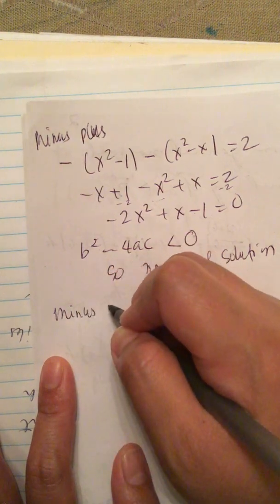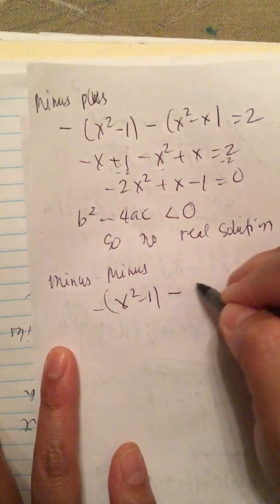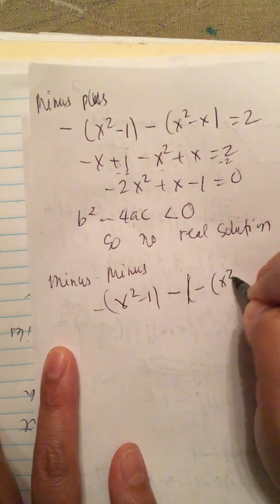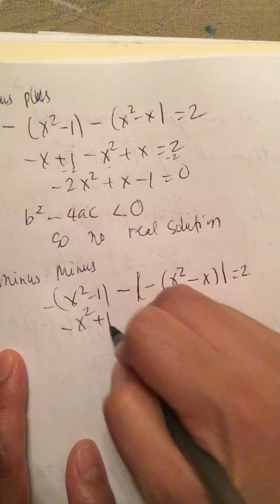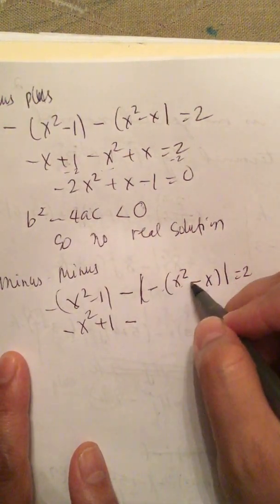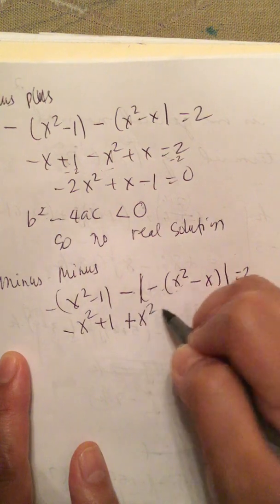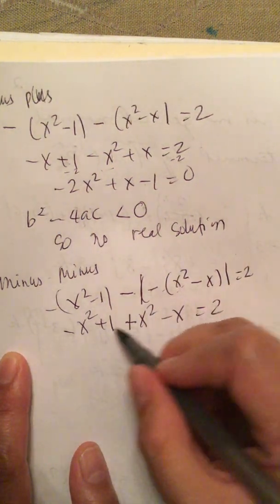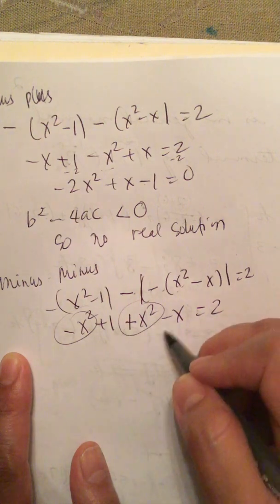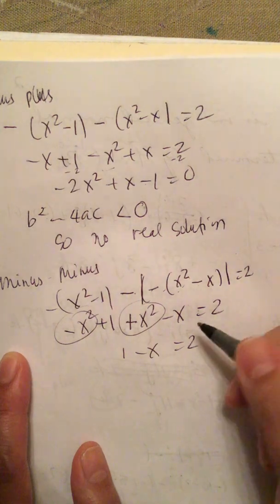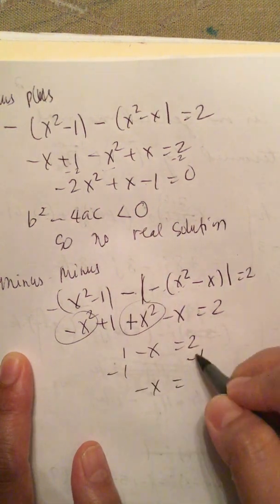Finally, we try minus and minus. We get minus x squared minus 1, minus x squared minus x, equals 2. Distributing, we get minus x squared plus 1 plus x squared minus x equals 2. Combining like terms, the x squared terms cancel, and we get minus x plus 1 equals 2, so minus x equals 1, giving x equals negative 1.